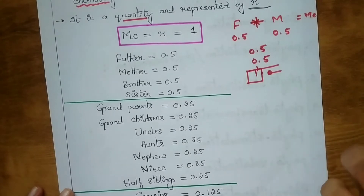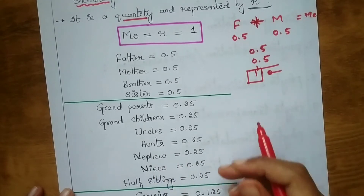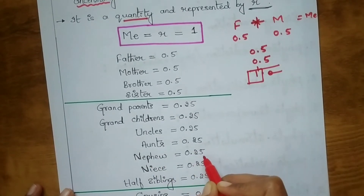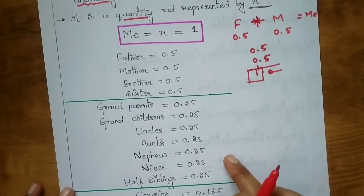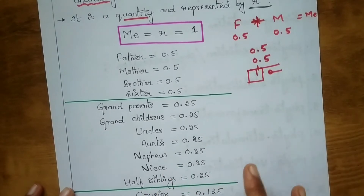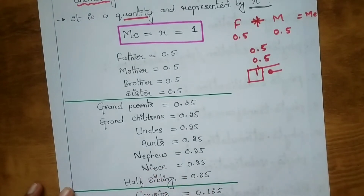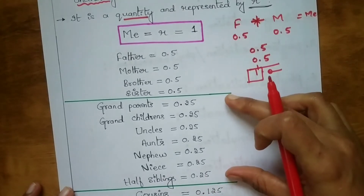Your uncle and aunt are 0.25. Your nephew — meaning the son of your brother or brother-in-law or sister-in-law — is related to you by 0.25. Your niece — the daughter of your brother or brother-in-law or sister-in-law — is also 0.25. Half siblings, meaning step-sister or step-brother, are related to you by 0.25.